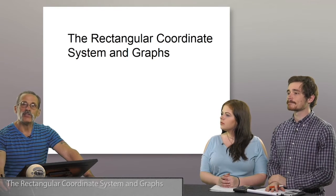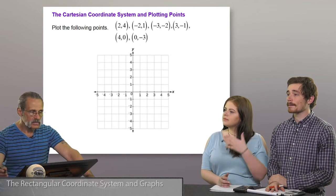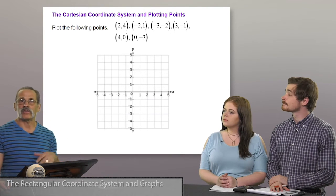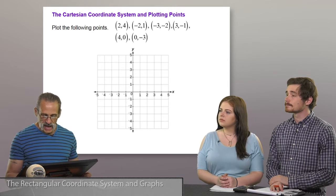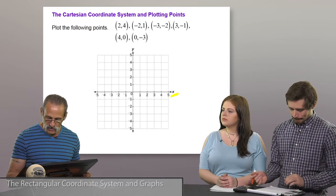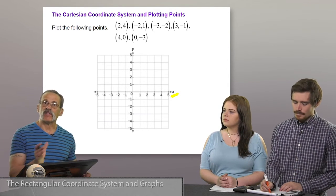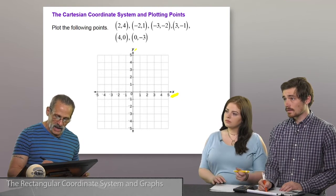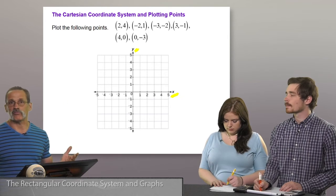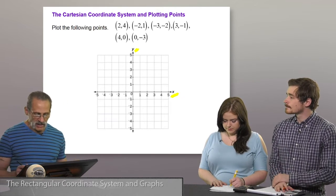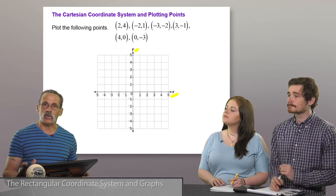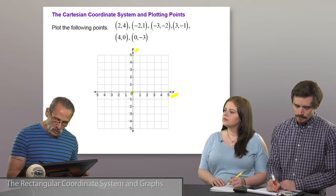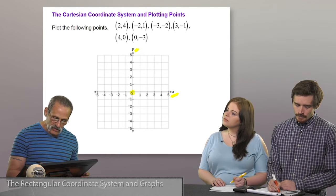The rectangular coordinate system and graphs. The Cartesian coordinate system is a way of locating points in a plane. We have an x-axis that represents the real number line, and a y-axis that also represents the real number line. The x-axis gives us our horizontal locations and the y-axis gives us our vertical locations. Right where the two meet, this is called the origin.